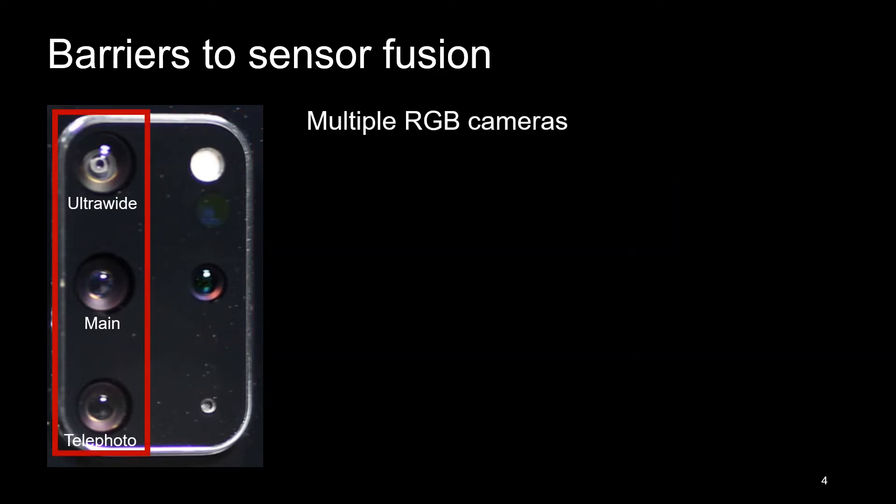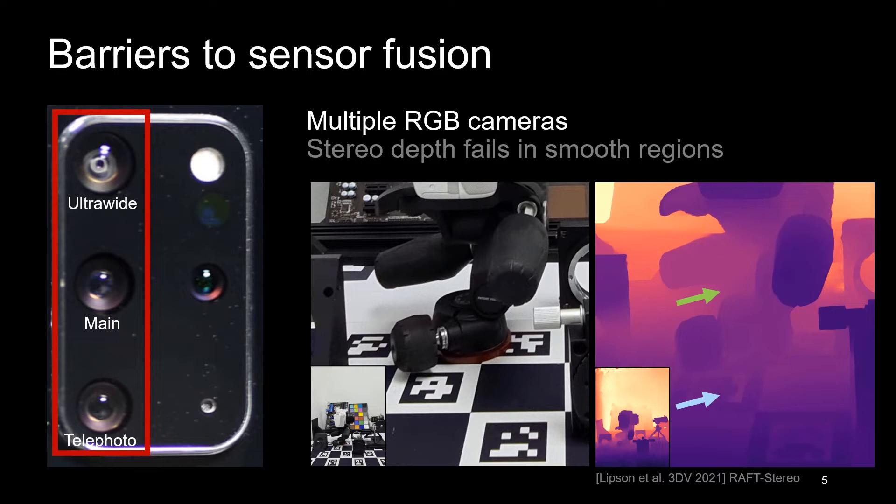Second, for stereo depth, our specific smartphone lets us capture from two of the three RGB cameras at once. But from passive stereo, textureless regions near the green arrow are overly smooth. While deep-learned priors can help, we sometimes transfer texture into the depth, such as near the blue arrow.